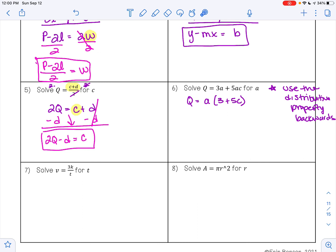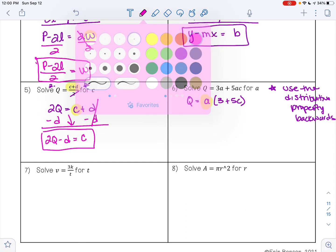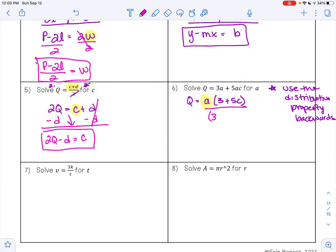So now I only have one A and I want to get that A alone. Well, this A is being multiplied by 3 plus 5C. How do I undo multiplication? Division. So I'm just going to divide both sides by 3 plus 5C. So on the left side of my equation I'll have Q over 3 plus 5C is equal to A. We have gotten A alone on one side of our equation and so we have solved this equation for the variable A.